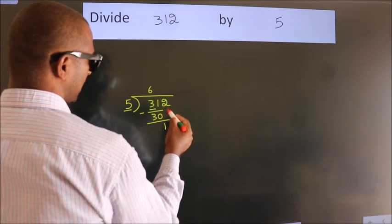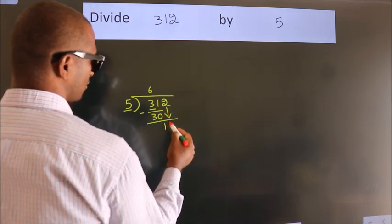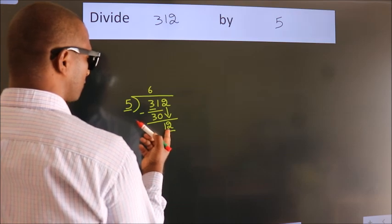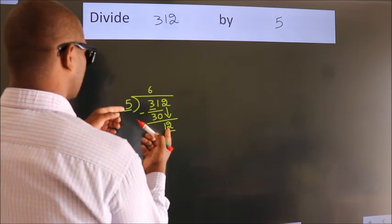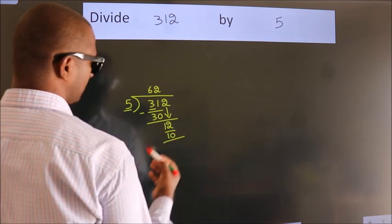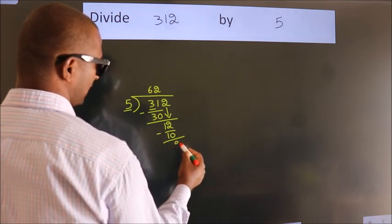After this, bring down the beside number. So 2 down. So 12. A number close to 12 in 5 table is 5 twos, 10. Now, we subtract. We get 2.